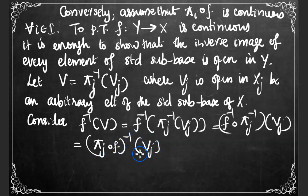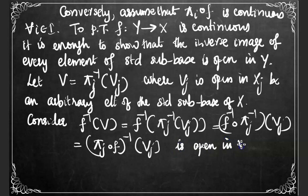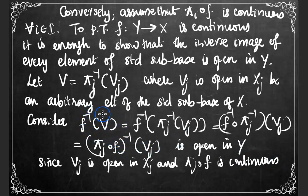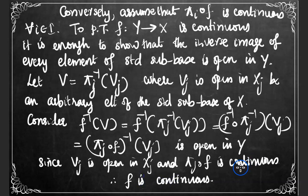This is the inverse image of Vⱼ under πⱼ∘f. We know that Vⱼ is open in Xⱼ and πⱼ∘f, by our assumption, is continuous. So this is the inverse image of an open set under a continuous function, and it will therefore be open in the domain Y. Thus we have proved that the inverse image of every element of the sub-base of X is open in Y, and hence f is continuous. This completes our proof.